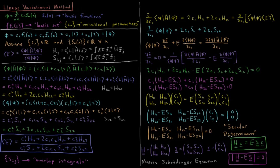In shorthand notation: the matrix of all H integrals is called the Hamiltonian matrix, the matrix of all S integrals is called the overlap matrix or S matrix, and the vector of wave function coefficients is called the coefficient vector or c vector. So the full matrix Schrodinger equation is hc equals eSc. When the basis functions are orthonormal, the S matrix becomes an identity matrix and we recover the standard Schrodinger equation hc equals Ec, equivalent to H-psi equals E-psi. The secular determinant then shorthand becomes the determinant of (H minus ES) equals zero.